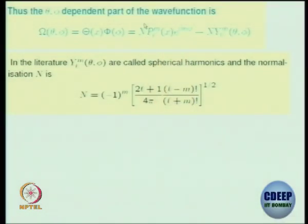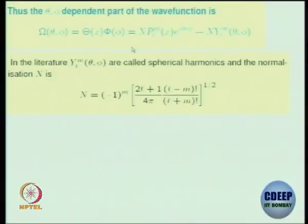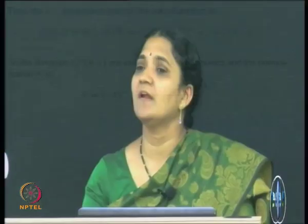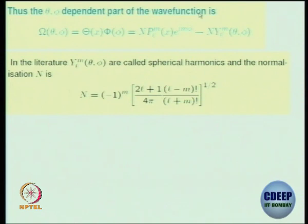This product - this product of P_L^m e to the im phi - is always called in the literature as spherical harmonics. And it is denoted by a capital Y_lm theta phi. So we will come to these issues of playing with spherical harmonics. But this is the connection: the associated Legendre polynomial multiplied by e to the im phi together is called as a spherical harmonic. Normalization - normalization is one thing which you should work it out, at least for a specific L and a specific m. But it can be determined for a general L and m.